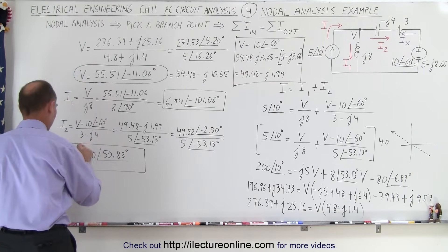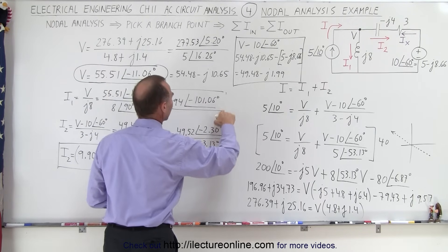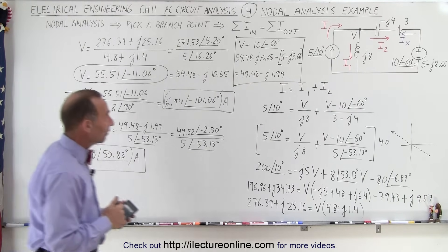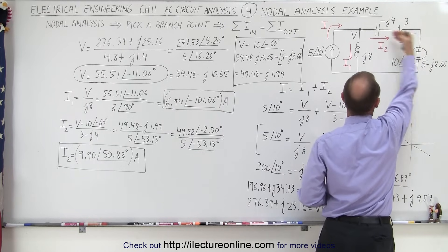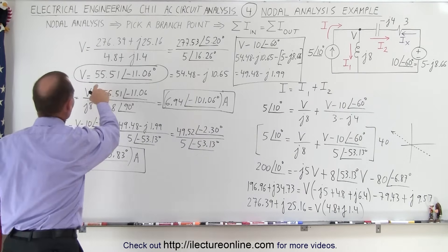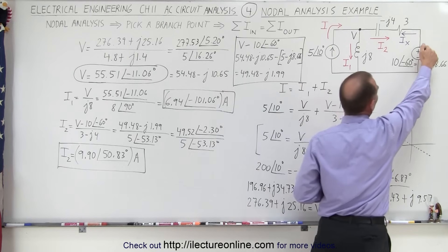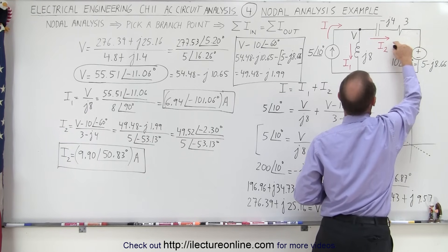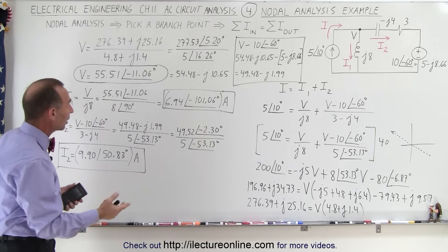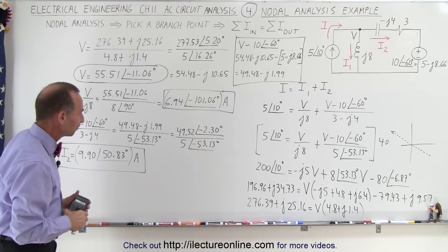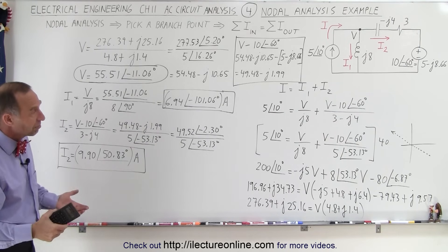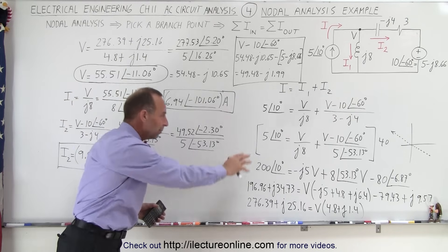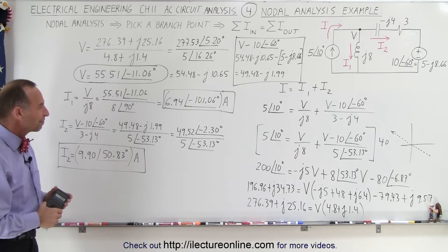Both i1 and i2 are in amps. Looking at the circuit again, v at the node turned out to be 55 volts, which is higher than the 10-volt source, so the current flows from node to source — i sub x is not needed. This is how we solve the circuit using nodal analysis. It's a straightforward method that takes a lot of work but reliably gives the right answers.